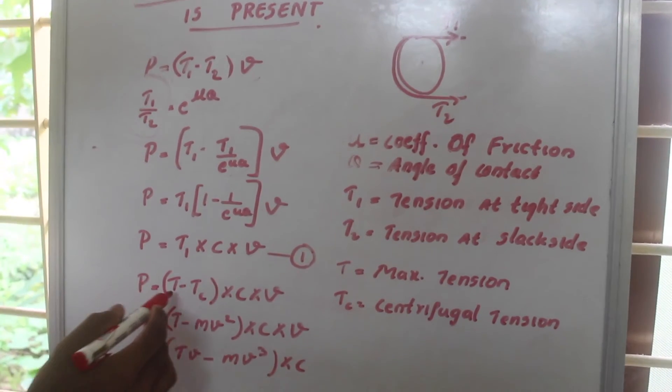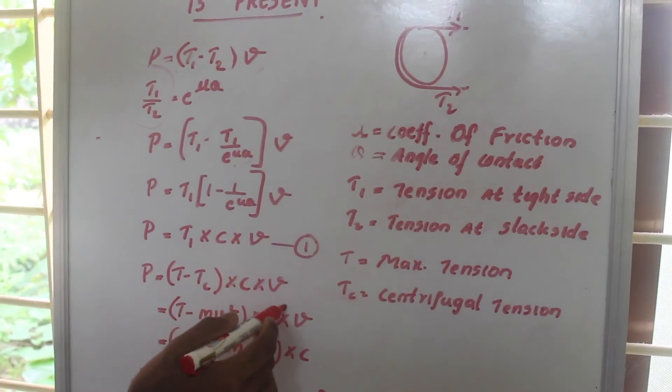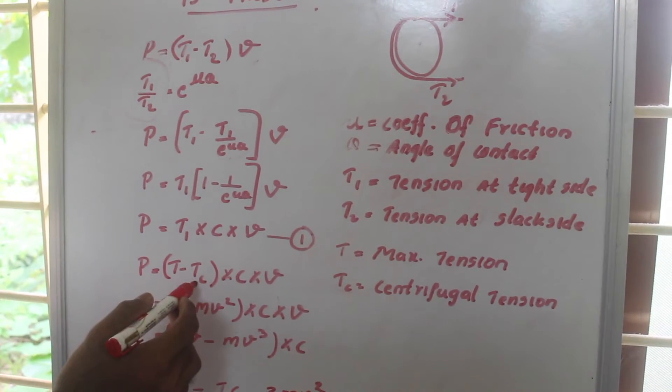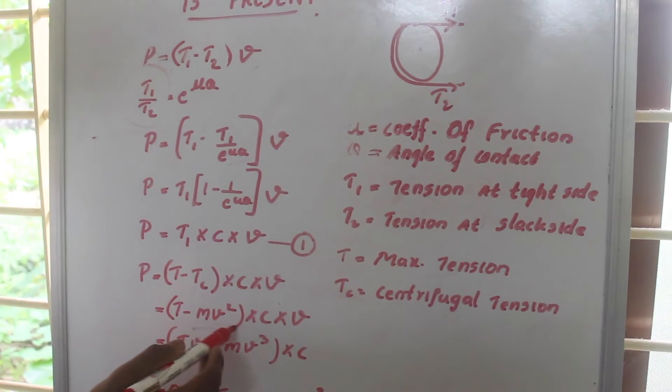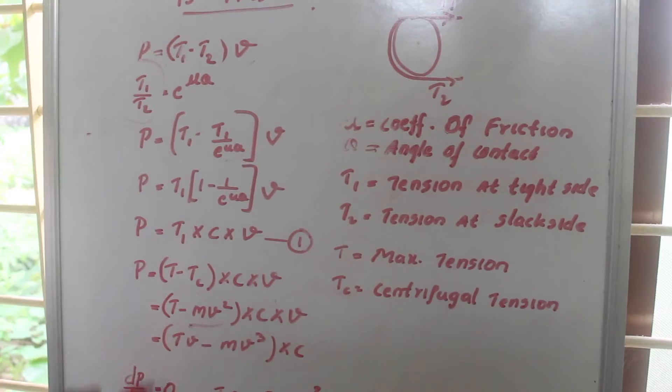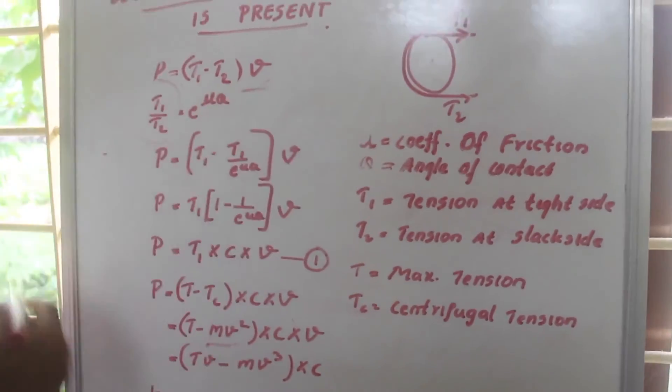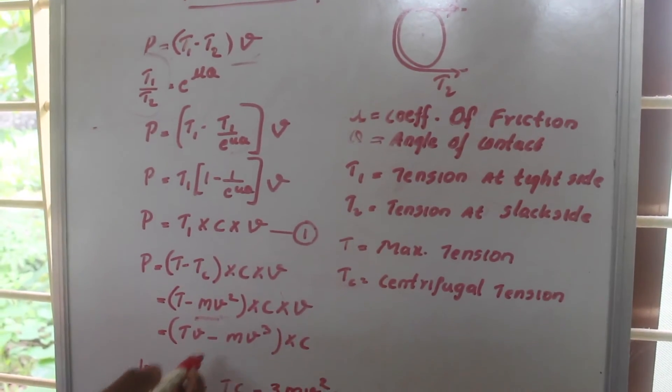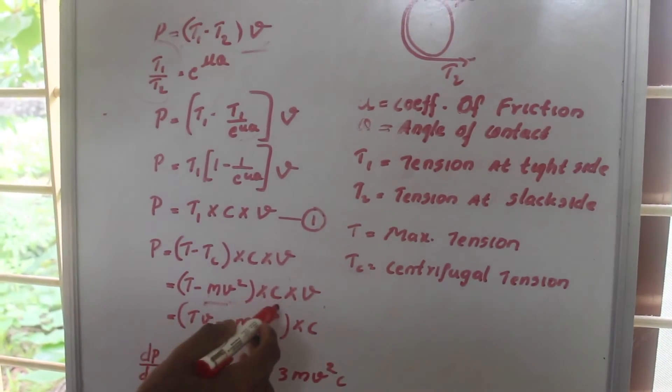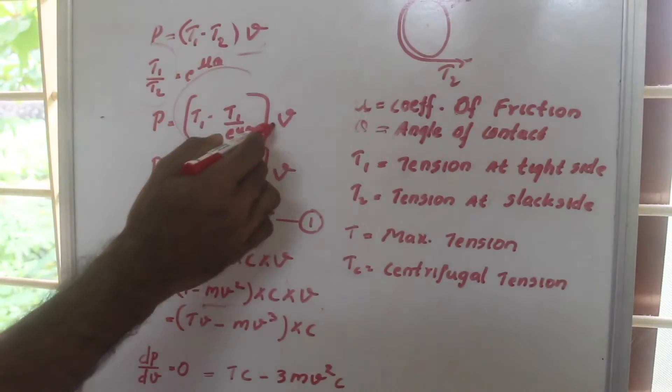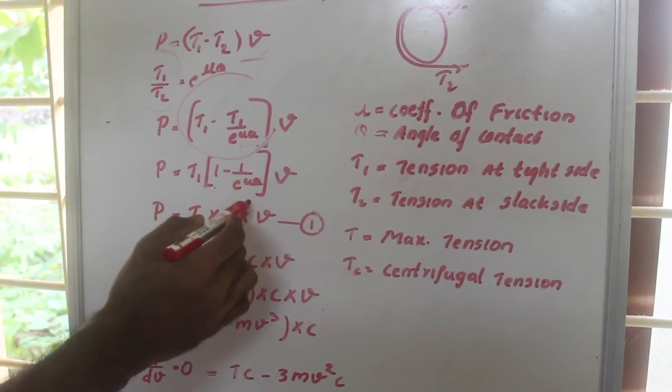So power is equal to (T minus Tc) times c times v, where the value of Tc is given as m times v squared, where m is the mass of the belt, v is velocity, and c is the constant (1 minus 1 by e raised to μθ).